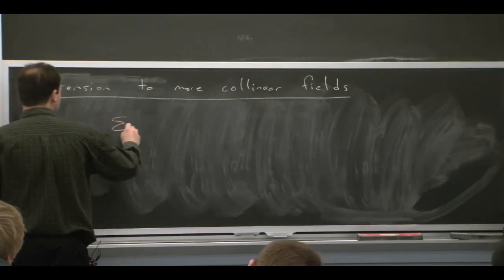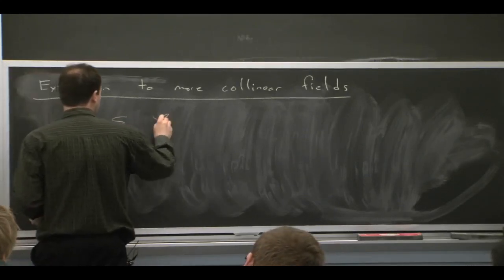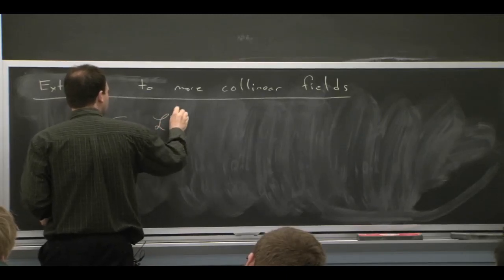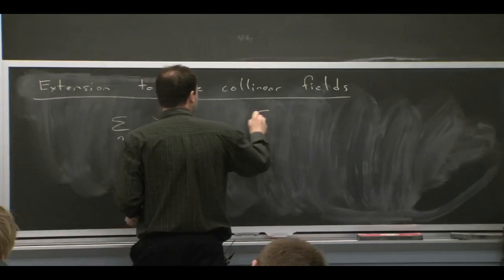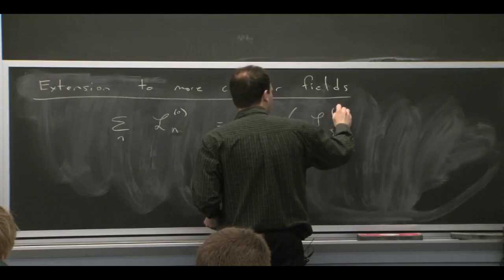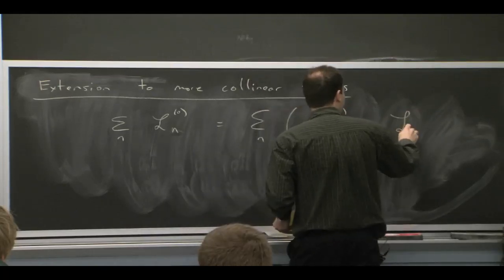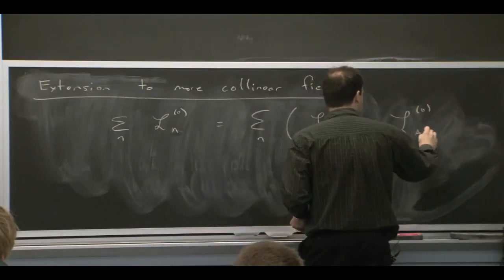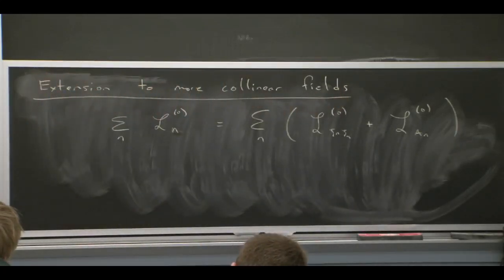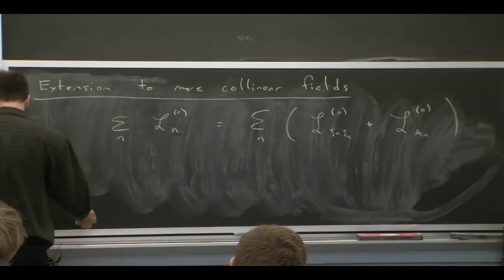And basically, what we have to do is take our collinear Lagrangian. Well, let me call it Ln0, which is the fermion piece plus the gluon piece. And we sum over n. We have to sum over all n's, which are corresponding to individual distinguishable collinear fields.